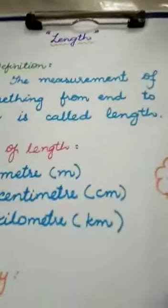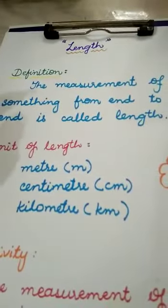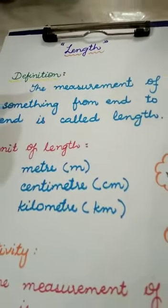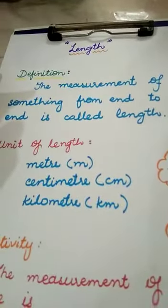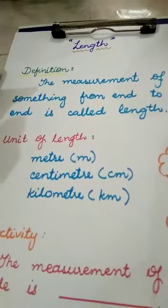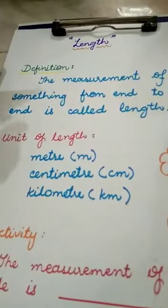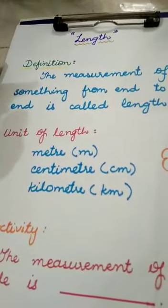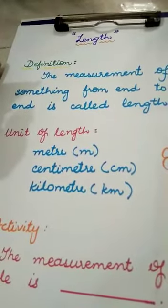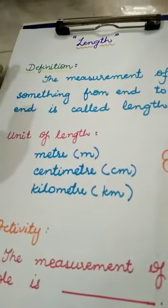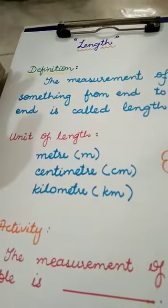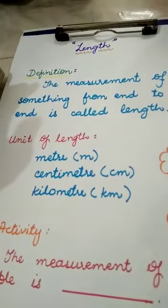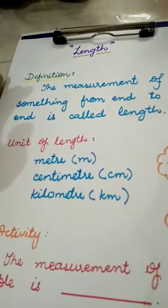Now girls, what you have to write in your work: the definition of length — length is the measurement of something from end to end. The units of length are meter, centimeter, and kilometer. Centimeter is measured by a ruler, meter is measured by meter scale or measuring tape, and kilometer is used for longer distances, like from home to school.